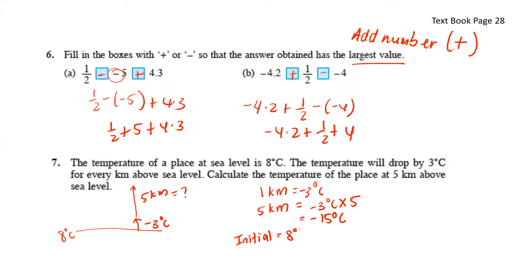The initial temperature was 8 degrees Celsius. So at 5 kilometers above sea level, that would be 8 degrees Celsius plus negative 15 degrees Celsius. And that gives us negative 7 degrees Celsius.